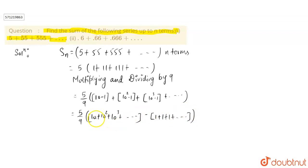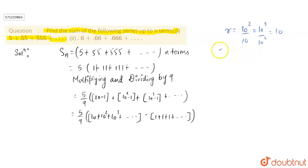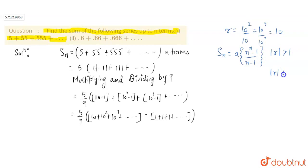Here we can see clearly 10, 10 squared, 10 cubed are in GP because the common ratio R is 10 squared by 10, which is the same as 10 cubed by 10 squared, which is 10. The sum of N terms of GP formula is S of N equals A into R to the power N minus 1, upon R minus 1. When mod of R is less than 1, the formula used is A into 1 minus R to the power N, upon 1 minus R.